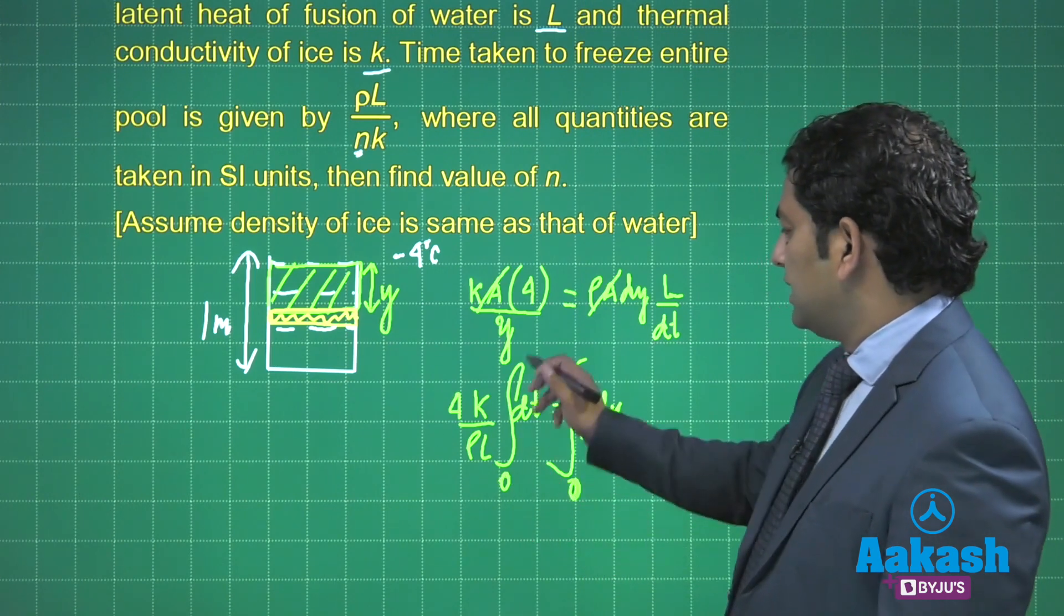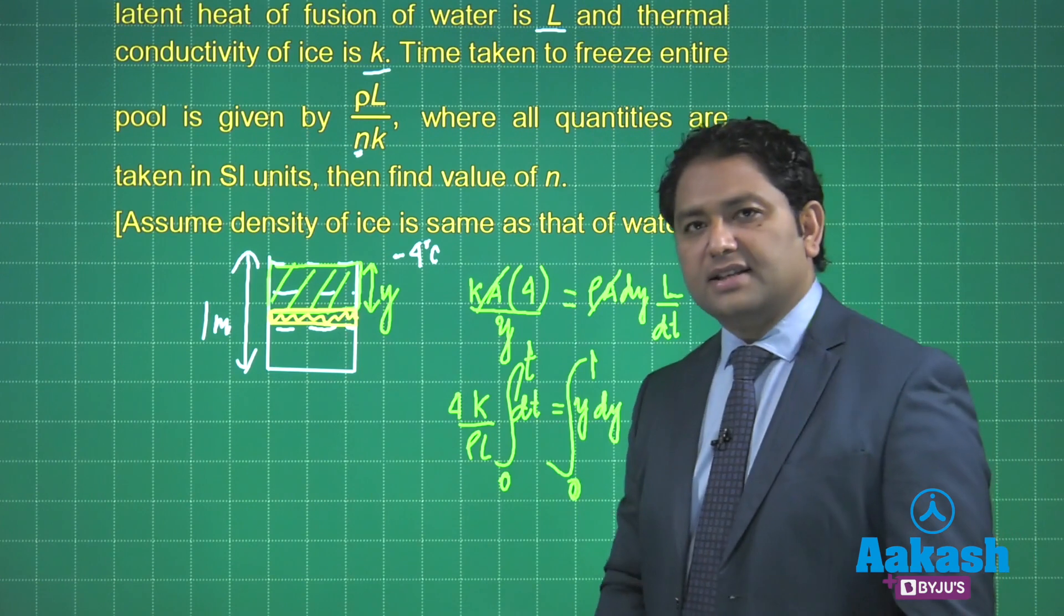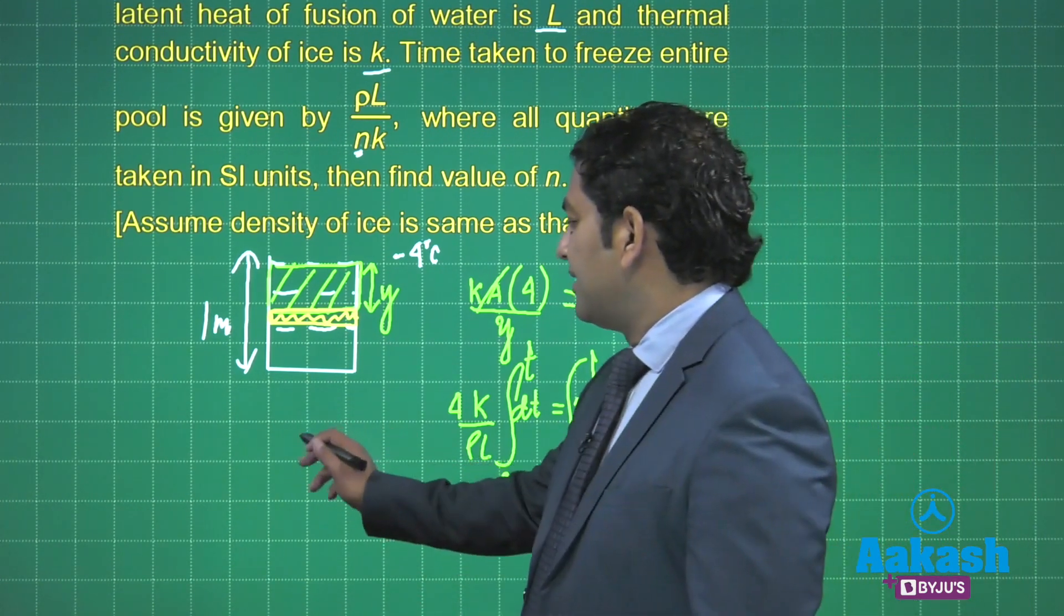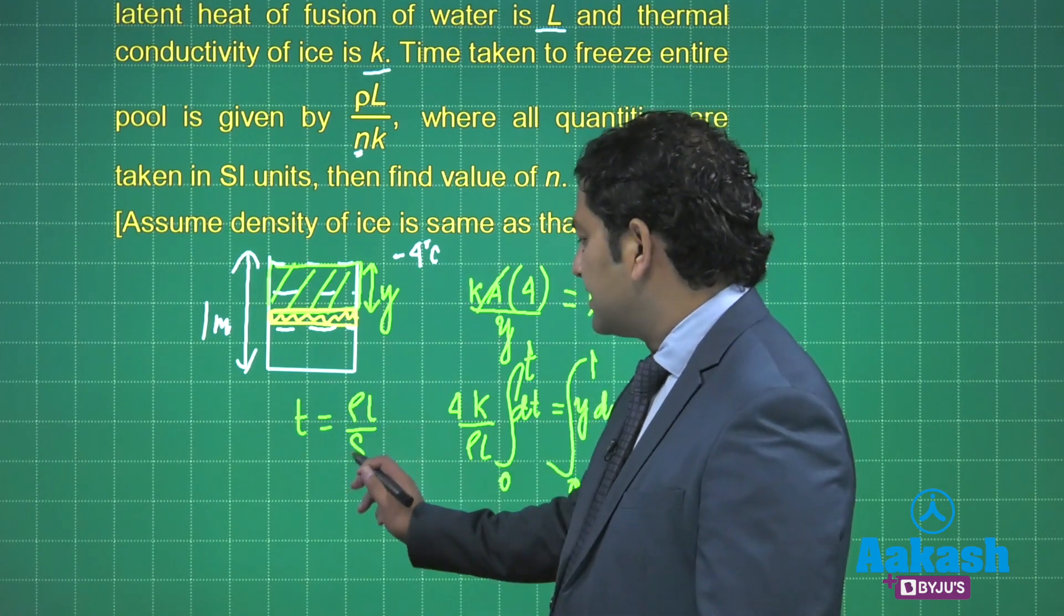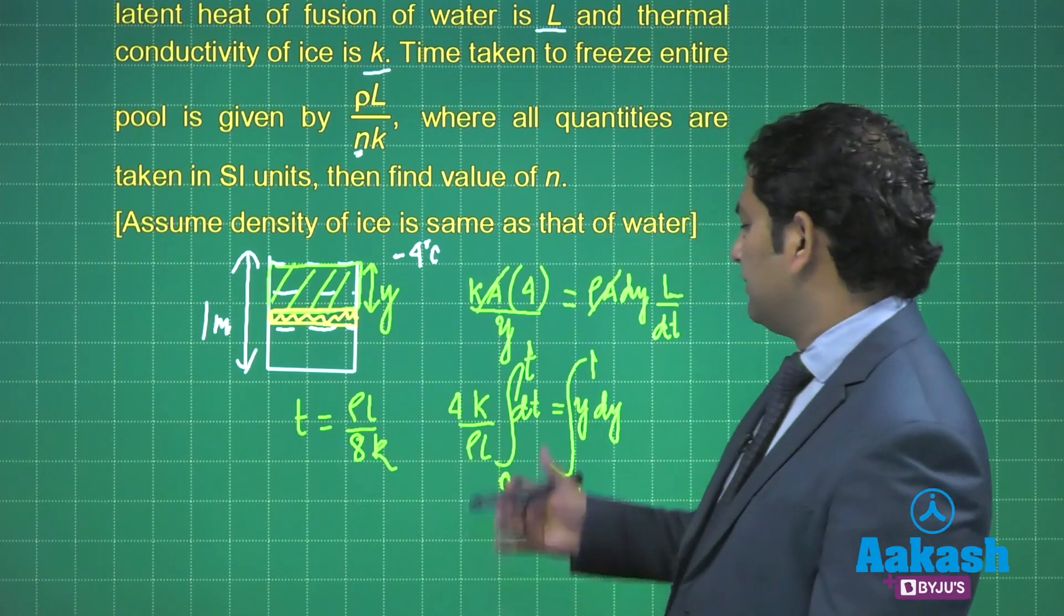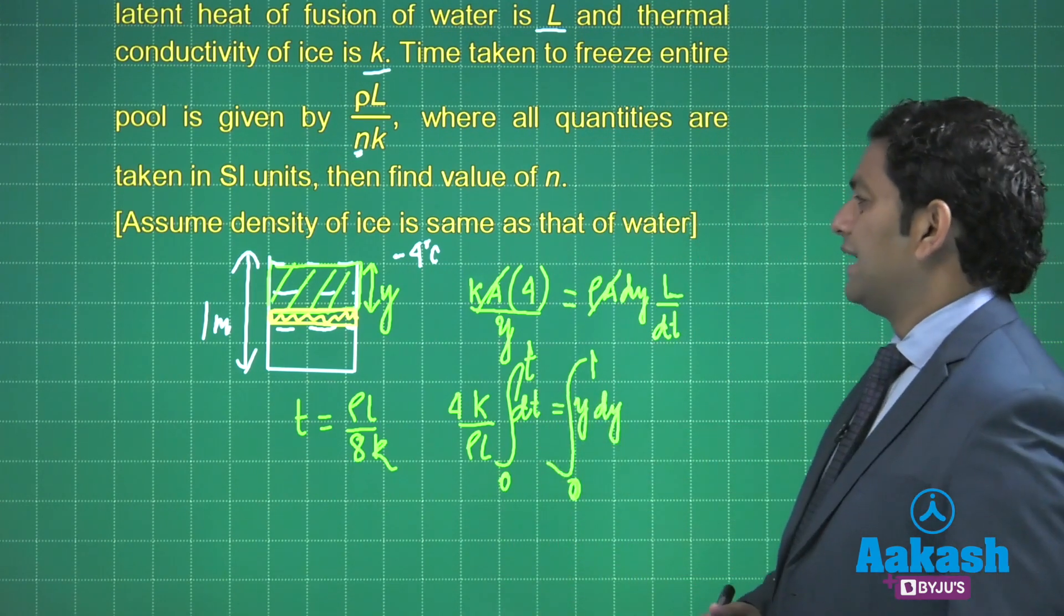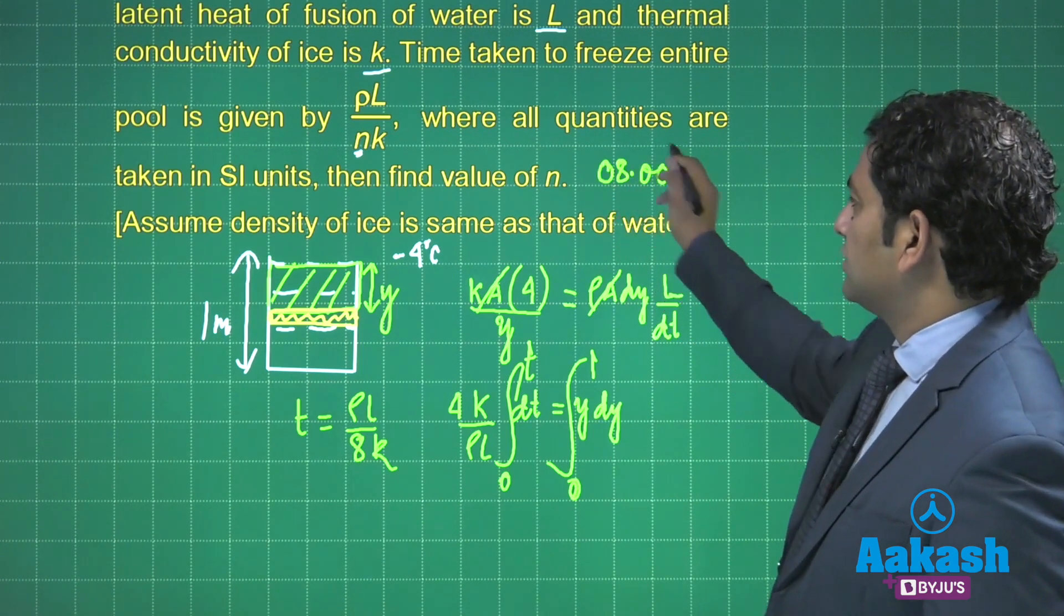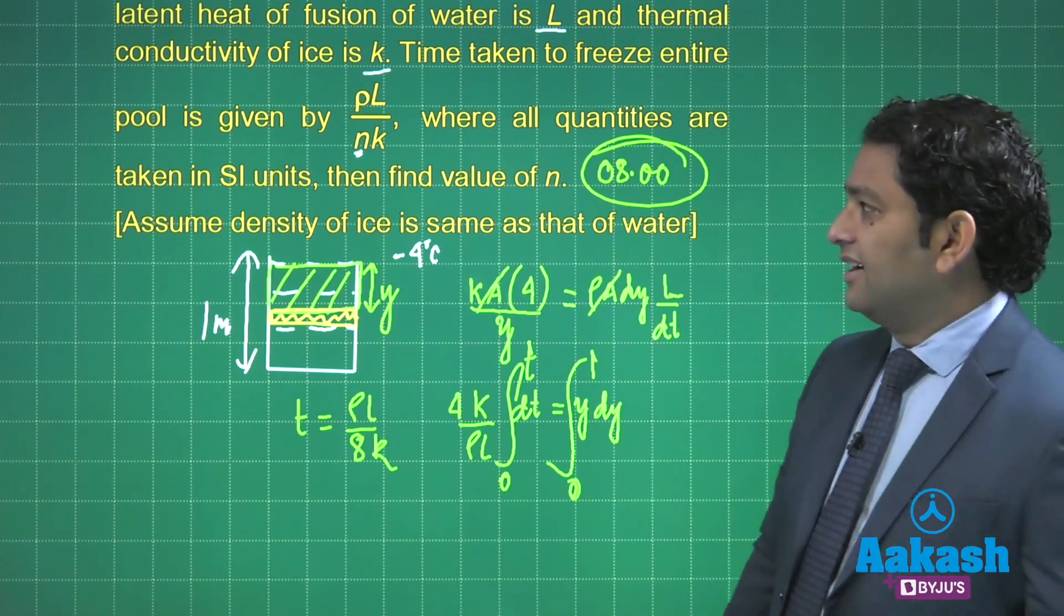4k divided by ρL dt, and that equals y·dy. And now I need to integrate it. t equals 0, y is 0. t equals t, y is 1, because we need to freeze the entire lake. You know, big mission. So when you do that, that value of time comes out to be ρL by 8k. Okay, when you solve that, which is very clear here, y² by 2 and all. So what would be the value of n as per the question? 0.08. That's done.